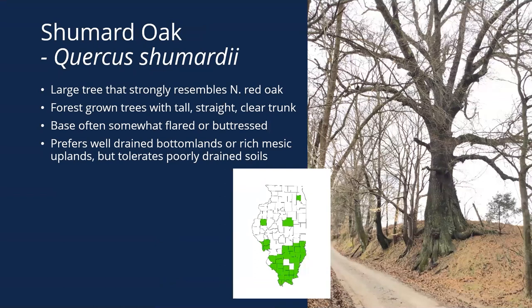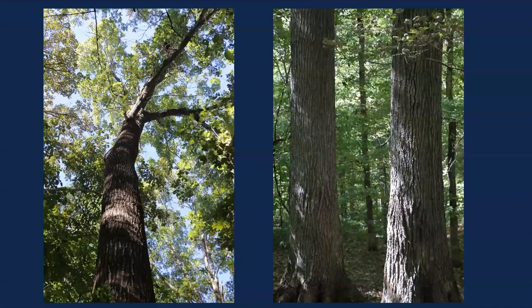Shumard oak is another big bottomland or well-drained rich upland species with a lot of timber value. It can be a very large tree and looks a lot like northern red oak — a lot of times it's hard to tell the two apart. Forest-grown trees have tall straight clear trunks. This one often has a noticeable flare or buttress at the base of the tree. It likes well-drained bottomlands but can grow in rich moist uplands and can get really big. Very easy to mistake for northern red oak.